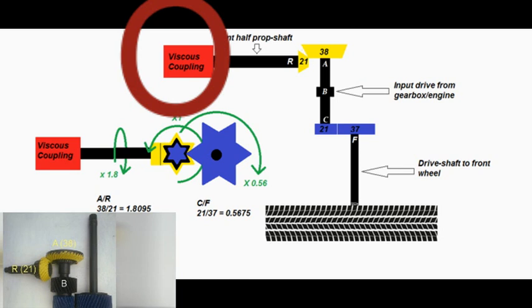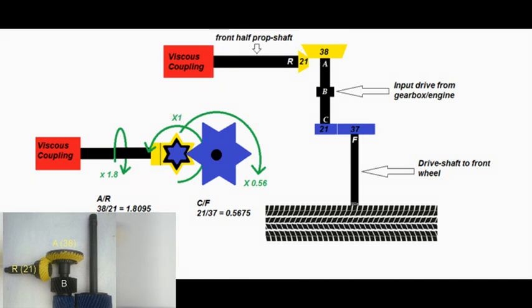With the larger gear A turning once, it forces the small gear R around more times, in fact 1.8095 times. The calculation is 38 divided by 21.